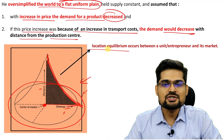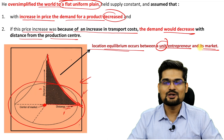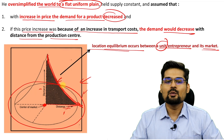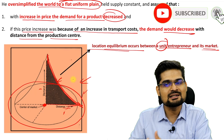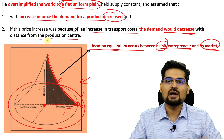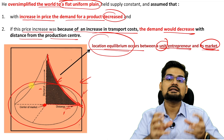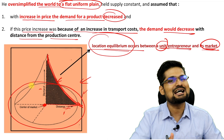Locational equilibrium occurs between a unit or entrepreneur and its market. This theory talks about a profile of equilibrium between two things: the entrepreneur who is selling the product at the production center, and the market point. Locational equilibrium is a balance between the entrepreneurs and the distance traveled from the market to fetch or sell the goods.